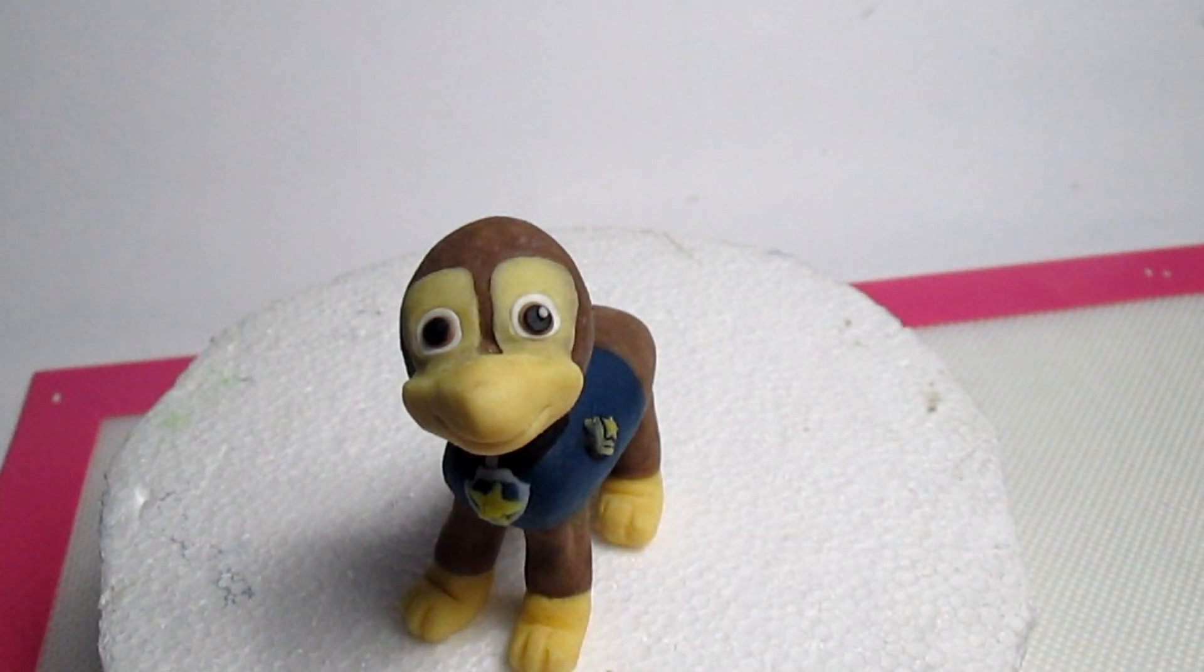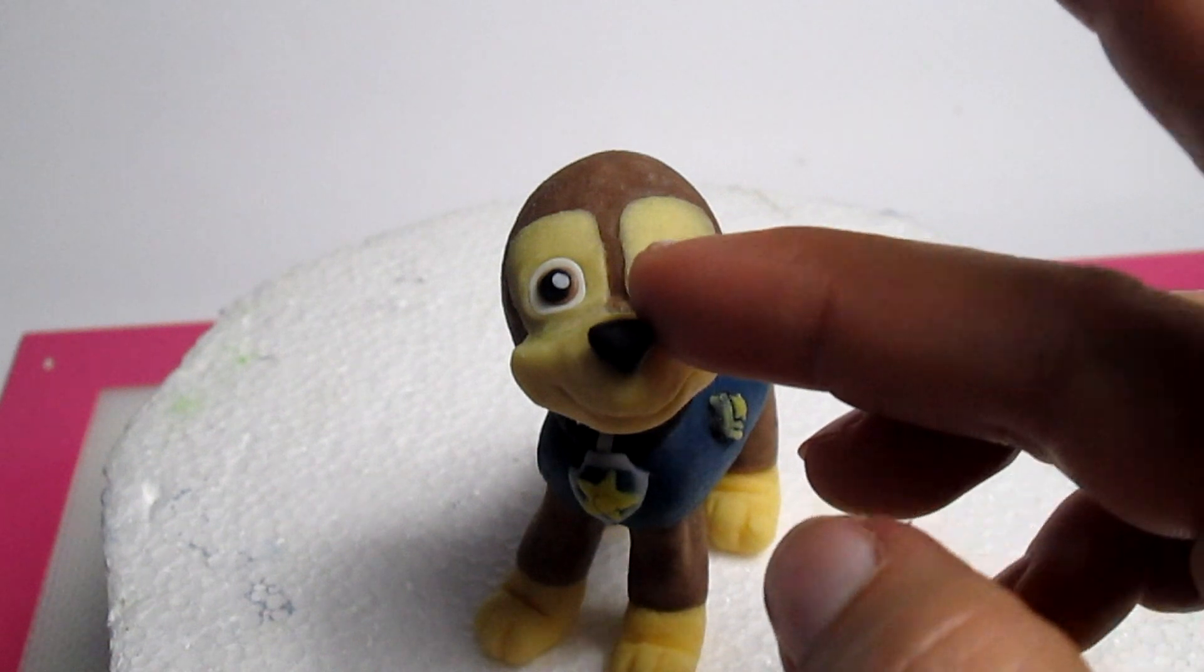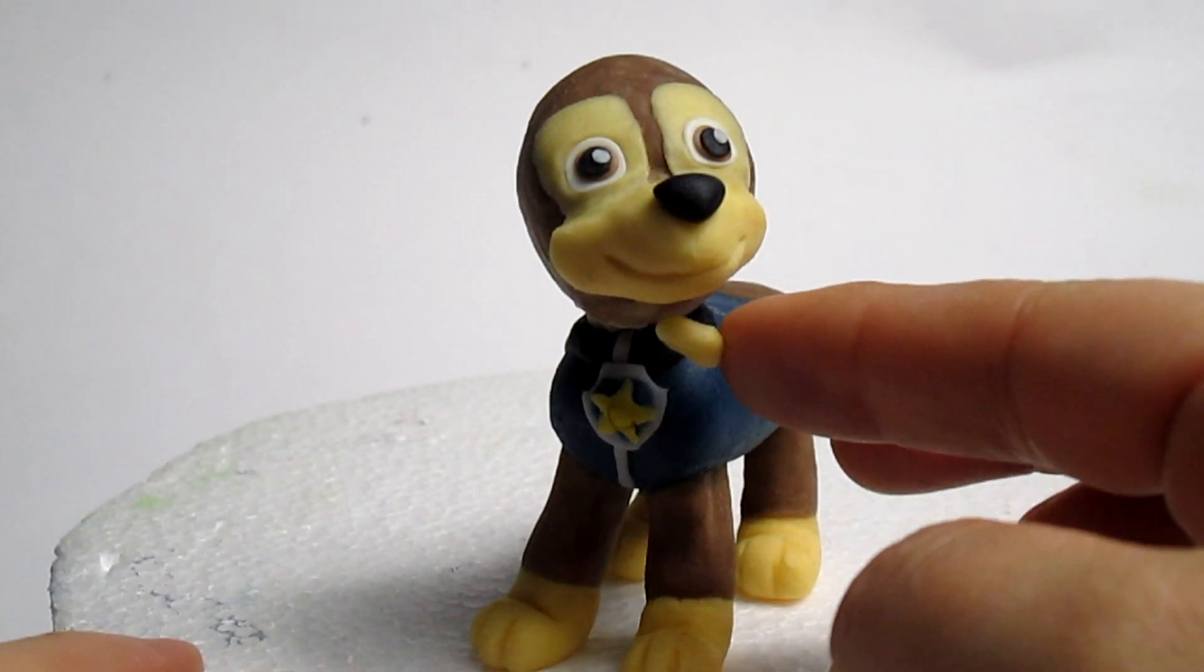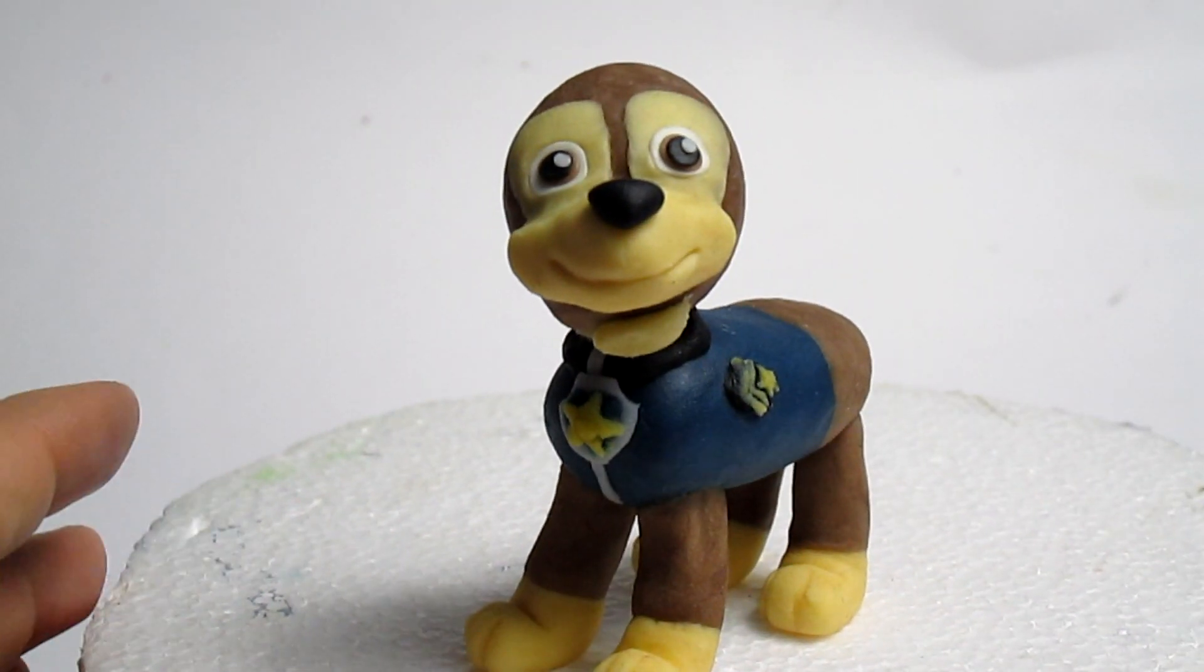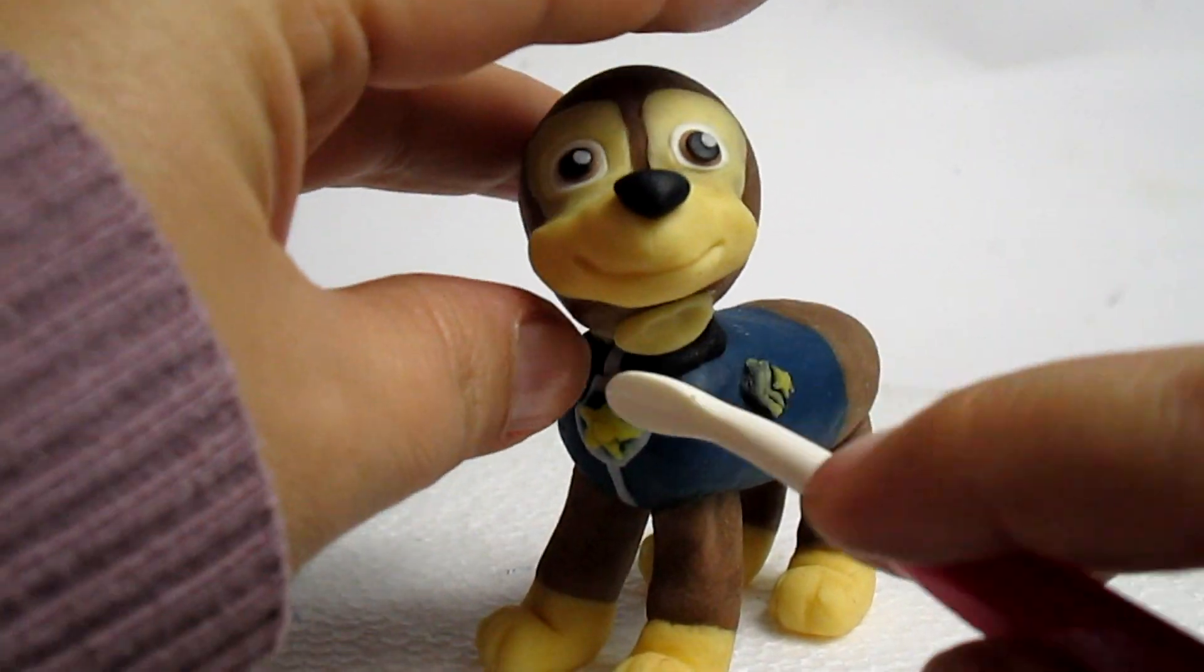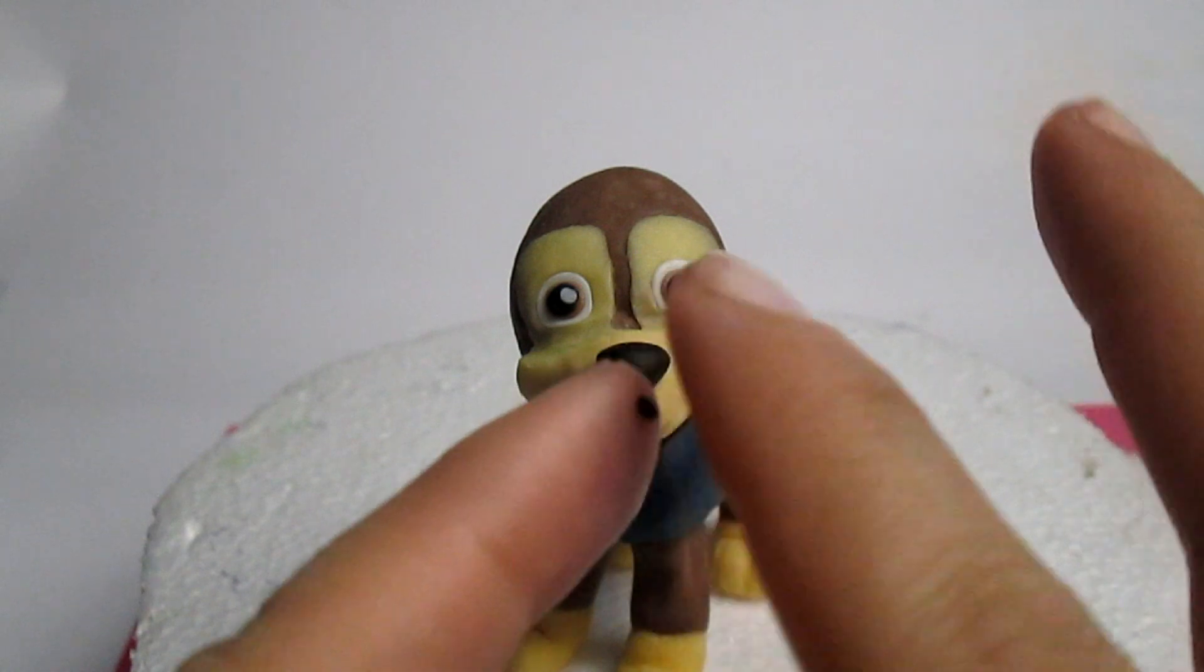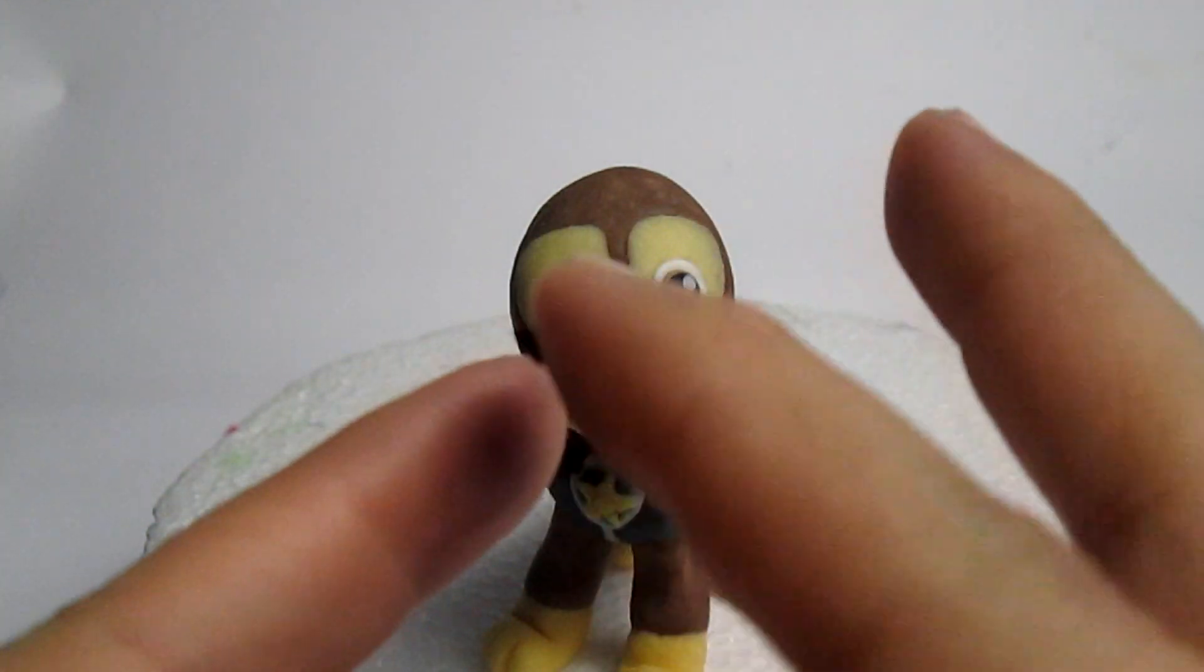For the nose, I'm placing a triangle of black fondant, and then I'm adding some more pale yellow fondant on the neck. For the eyebrows, I'm just placing two small strips of black fondant.